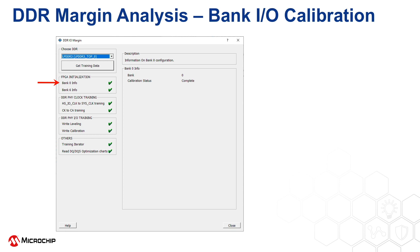If there is an error, a red X is displayed, and the description box will show probable causes to help with debugging. The DDR interface being analyzed resides across two banks, Bank 0 and Bank 6. Click on Bank 6 info to get the IO calibration results from that bank.